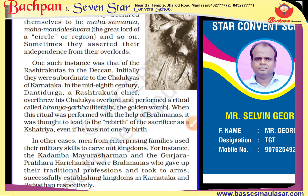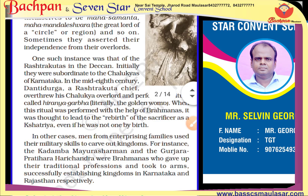Ek achha instance yaad aata hai: Rashtrakutas ke South India mein, jo Chalukyas ke subordinates the, us mein se ek jo chief tha — Dantidurk — usne Chalukya ke raja ko hata diya, aur khud ek ritual yani puja ki, jiska naam diya Hiranyagarbha — iska matlab tha golden womb. Iska matlab tha ki jo bhi yoh sacrifice ya puja karta, woh rebirth mein kshatriya ki roop mein hota — yaani bhale hi woh kshatriya na ho, lekin use kshatriya ki roop mein maana jata.